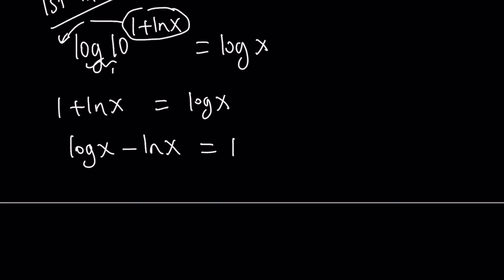And then I'm going to use what's called the change of base formula. The change of base formula works like this: if you have log a with base b, you can write it as log a over log b. The base can be anything — you can make it x, you can make it e, you can make it 10, whatever you want.